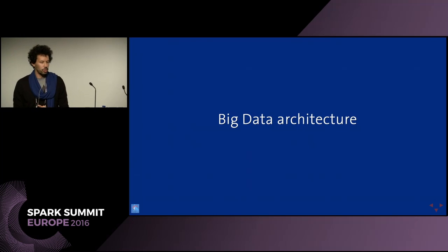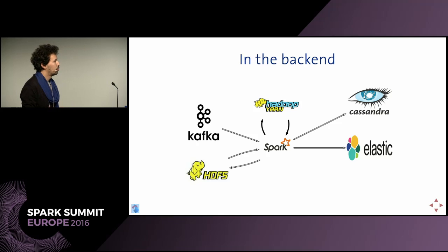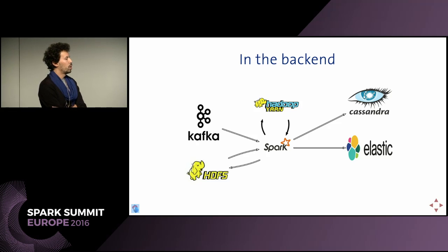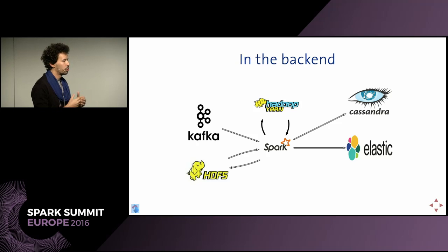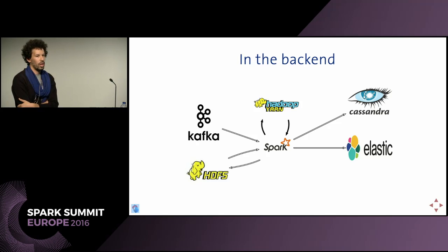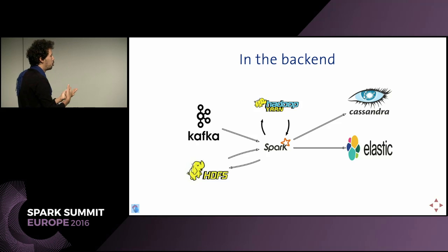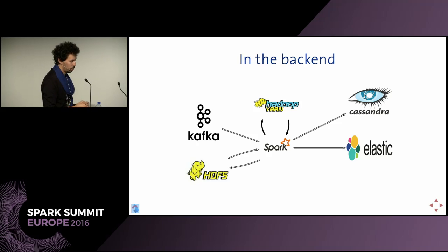Let me talk about the big data architecture behind the City product. It's very classic. We have a flow of network events coming into our Kafka cluster, and Spark is at the heart of our computations. We have a mix of streaming and batch jobs. What we do daily is compute features out of network traces and get aggregates about mobility. Once we have the aggregates, we push them to Cassandra and Elasticsearch, then expose results through APIs — typically implemented in Spray — or a web portal where urban planners can see what's happening.